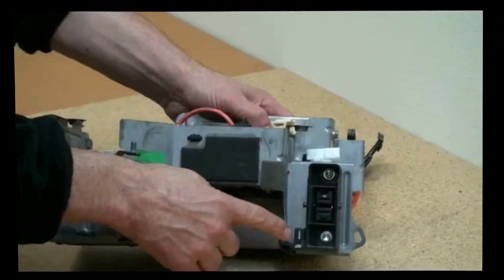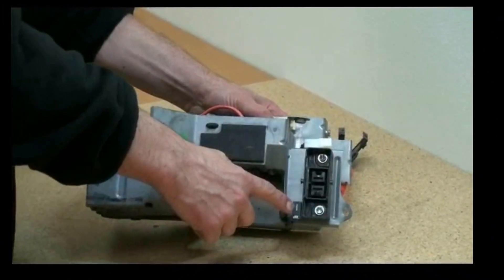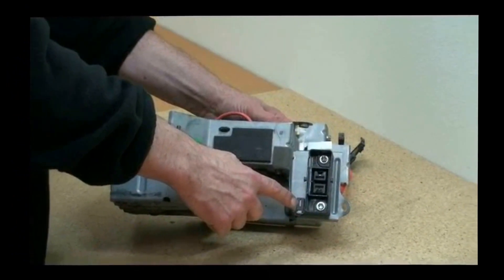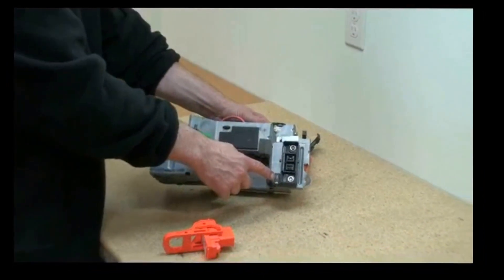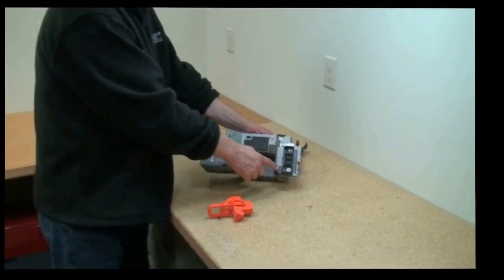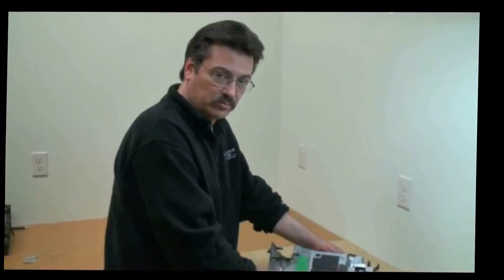And when the bale is lifted up, it actually lifts some contacts out of something called the interlock system. The interlock is a safety system built into the car to make sure that high voltage is removed in the event that the manual disconnect is removed.